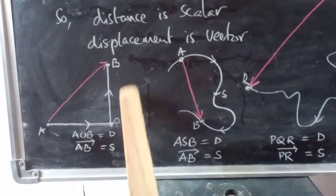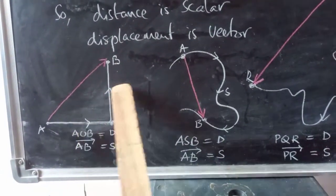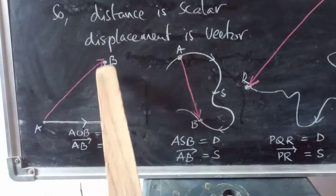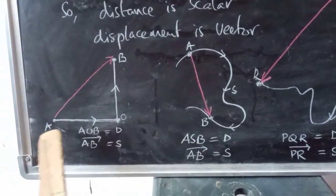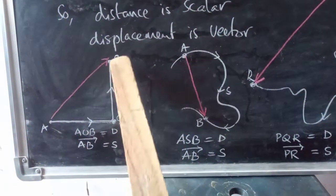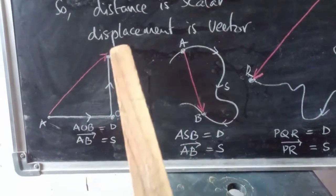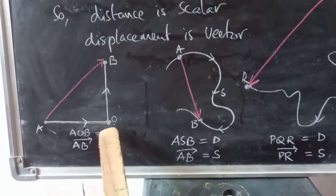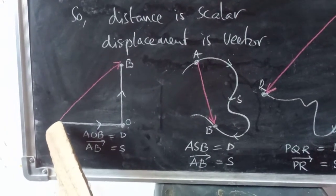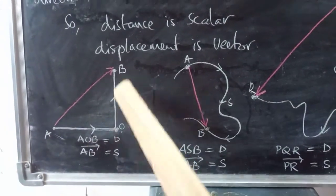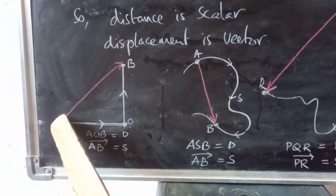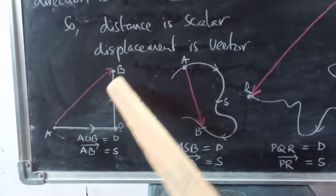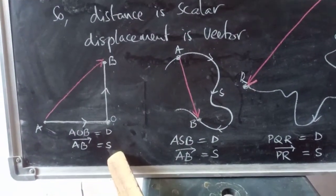Along the path A to O to B, the direction changes — it has no single particular direction. The total traveling distance through that path is called distance, written as D, equal to A-O-B. But going directly from A to B in a particular direction, that shortest path is called displacement, symbolized as S.